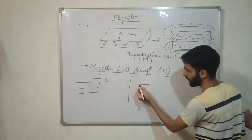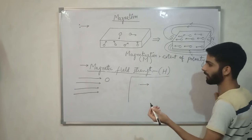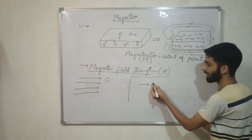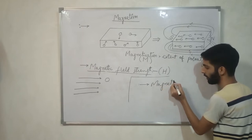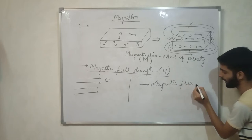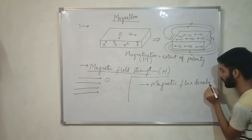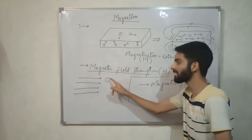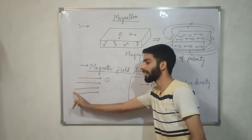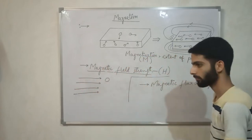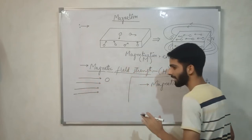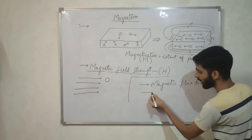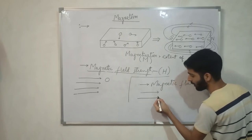Now another definition: magnetic flux density. In magnetic field strength, we discussed a unit north pole and how much force it experiences because of the magnetic field. The magnetic field is made by magnetic lines of force. The field will be more if those lines are denser, and feeble if they are rarer. Magnetic flux density defines how dense or rare those lines are. It is given by the letter B. Where the lines are rarer, B is small; where they are denser, magnetic flux density B will be more.